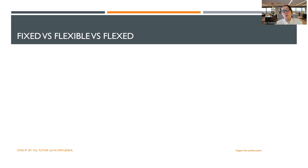When we do that, we need to choose the right budget. There are three types of budget that sound very similar but actually mean different things: fixed, flexible, and flexed.